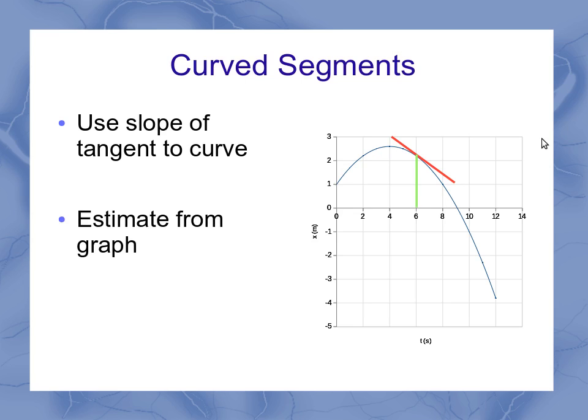Once I've done that on my graph, I might be able to estimate from the graph what the slope of that tangent line is. Otherwise, if you want to calculate it exactly, you're going to need to use calculus to find the instantaneous velocity at a point along a curved segment.